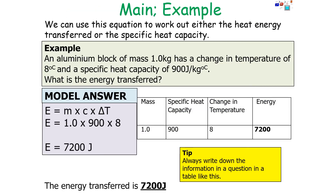We can use the equation to work out either the heat energy transferred into or out of a substance, or the specific heat capacity. For example, an aluminium block of mass 1 kg has a change in temperature of 8°C and a specific heat capacity of 900 J/kg°C. What is the energy transferred? Using E = m × c × ΔT: it's 1 × 900 × 8, which gives 7,200 joules. Remember to always include your units with your values.